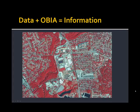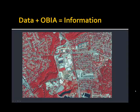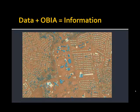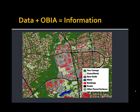However, when we combine data with object-based image analysis technology, we can generate information. So we have our high-resolution aerial or satellite imagery, our LiDAR or light detection and ranging data set, and using object-based image analysis software such as eCognition, we can generate high-resolution land cover.